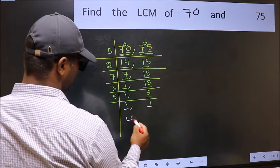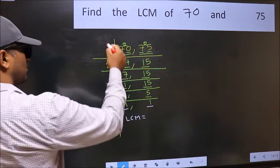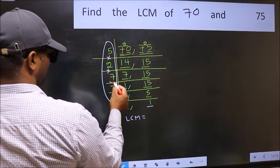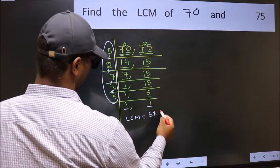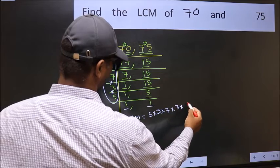So our LCM is the product of these numbers. That is 5 into 2 into 7 into 3 into 5.